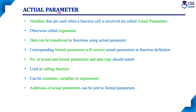First, actual parameters. Parameters are nothing but simply variables. Variables that are used when a function call is involved are called actual parameters. We already know what a function call is — the function call is used in the main function. For example, add(a, b). This is a function call; 'add' is the function name, and 'a' and 'b' are the parameters used in the function call — these are nothing but actual parameters.